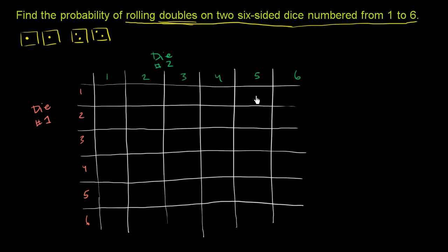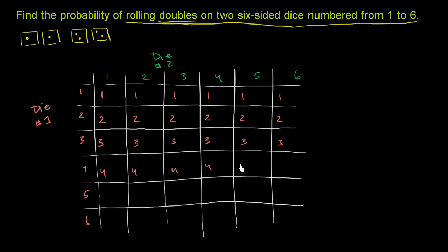All of this top row — these are the outcomes where I roll a 1 on the first die. This row is where I roll a 2 on the first die, this is where I roll a 3 on the first die, then a 4 on the first die, a 5 on the first die, and this last row is all the outcomes where I roll a 6 on the first die.